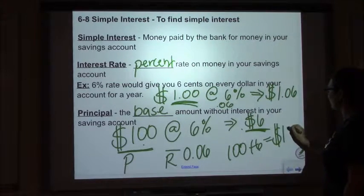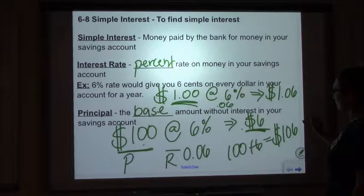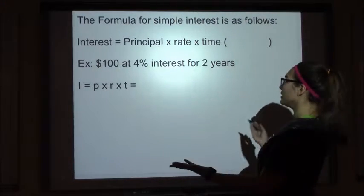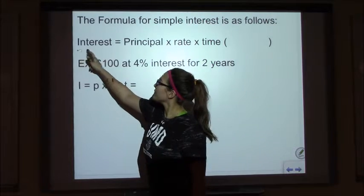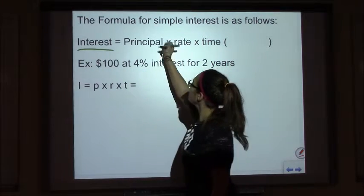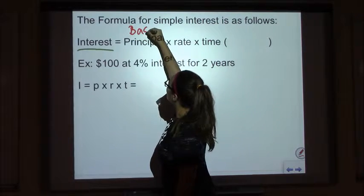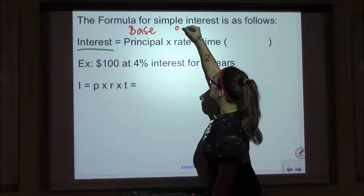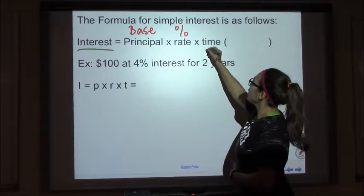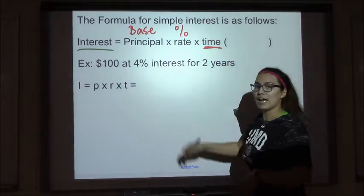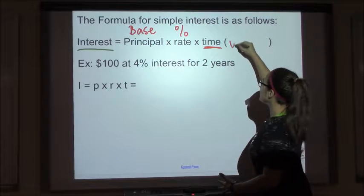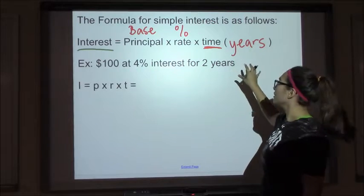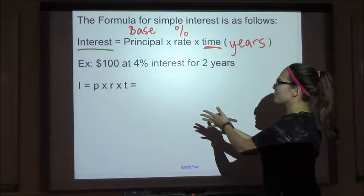Our total is a hundred and six dollars. When we look at our formula, we're looking for simple interest. The principal is our base — it's our original amount, what we put into the bank. The rate is the percent the bank wants to give us. Time is measured in years — we want to know the number of years the money has been in the bank.